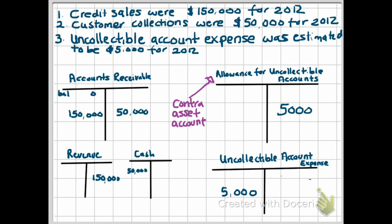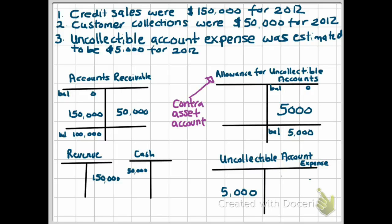The normal balance of the allowance for uncollectible accounts is a credit balance. It is a permanent account, so it appears on your balance sheet right alongside accounts receivable, with a beginning balance — assumed to be zero — and an ending balance of $5,000 after adjusting for the expense. Your accounts receivable will show $150,000 from credit sales less $50,000 from collections. Notice how the uncollectible account expense does not touch accounts receivable; the only journal entry under the allowance method is to debit uncollectible account expense and credit the allowance account.